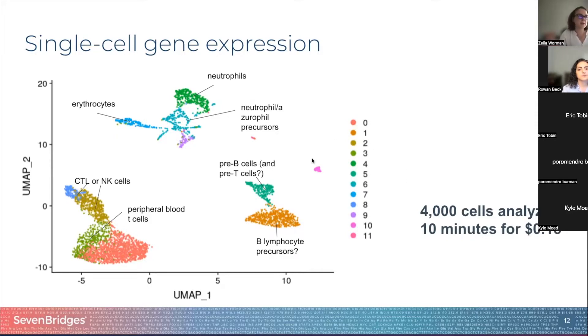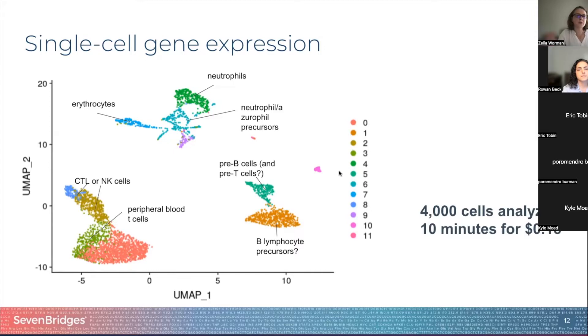We were able to run 4,000 cells analyzed in 10 minutes for under 15 cents. You can easily picture how these tools can be used for different purposes, and this graph might look different for an individual with cancer. This is one of the tools we released in 2021.